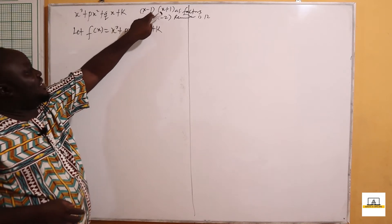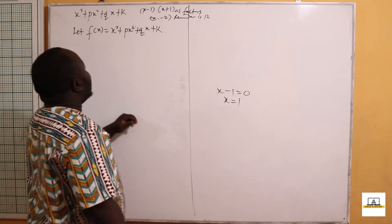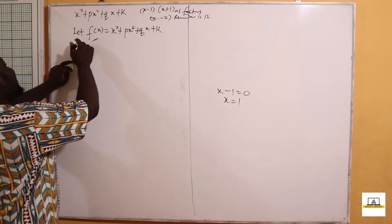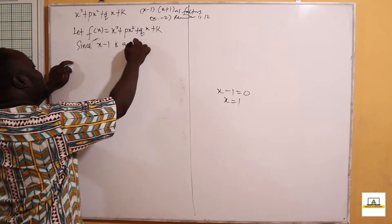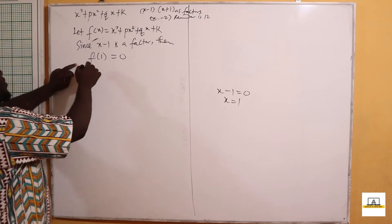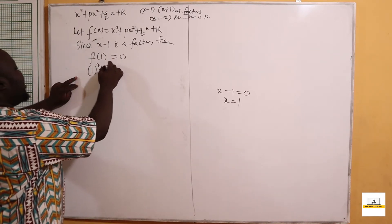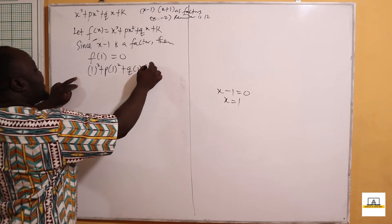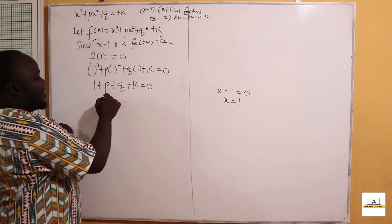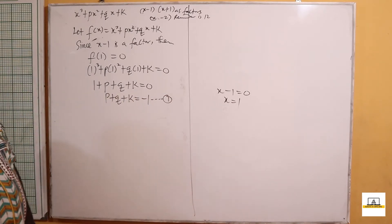If x minus 1 is equal to zero, then x is equal to 1. So if x minus 1 is a factor, then f of 1 should give us zero. So f of 1 gives us 1 cubed plus p times 1 squared plus q times 1 plus k equals zero, which gives us 1 plus p plus q plus k equals zero, so p plus q plus k equals negative 1. We call this Equation 1.